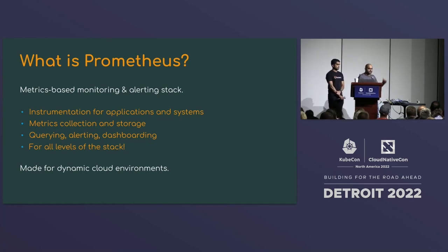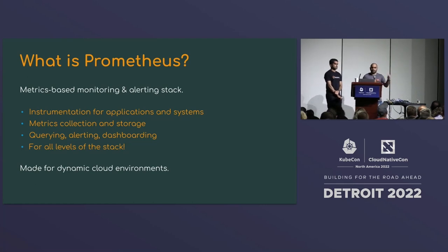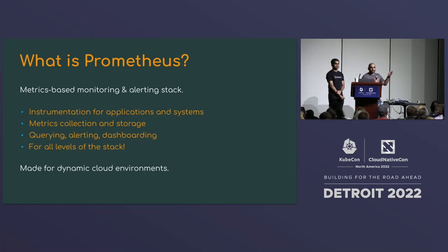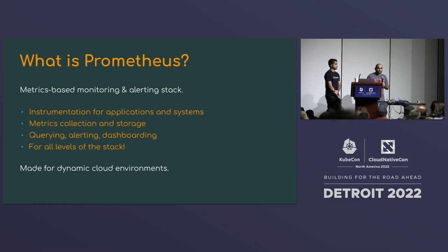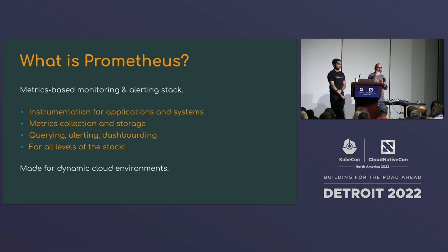This is for all levels of the stack — you can monitor systems, applications, hobby projects, weather, anything. It's very generic. What differentiates it from older monitoring systems is that it's made for highly dynamic cloud environments, like Kubernetes, where pods come and go. Prometheus is really good for environments where you don't have static hosts but dynamic pods that change over time.